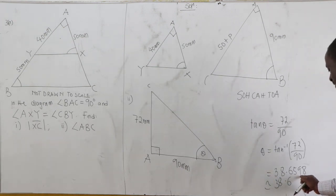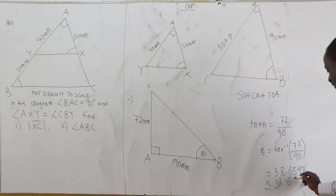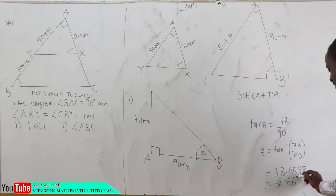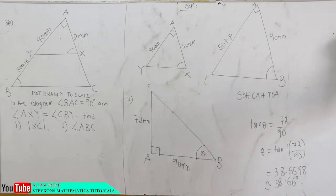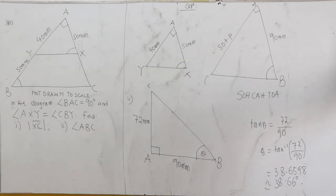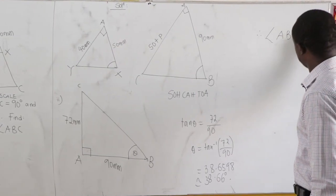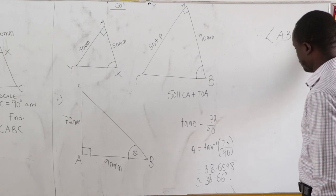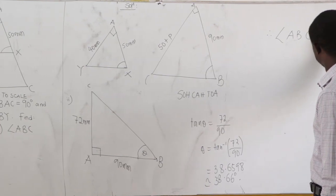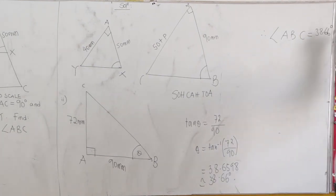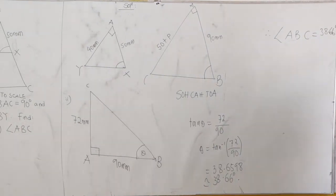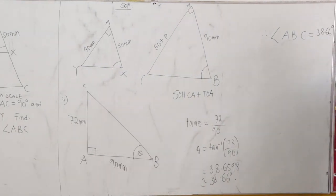The digit after 38.65 is 9, which is 5 or above, so we round up the 5 to 6. Hence angle ABC is 38.66 degrees.